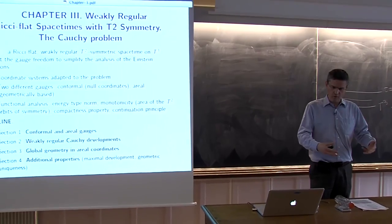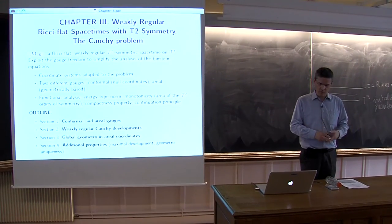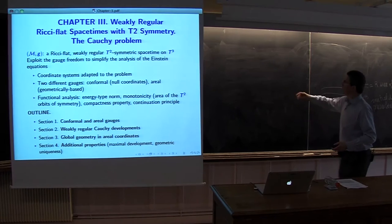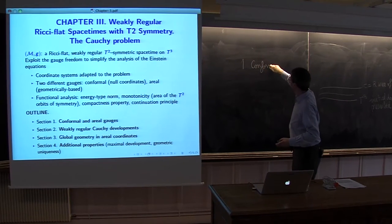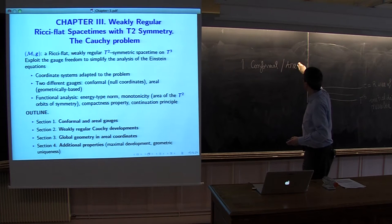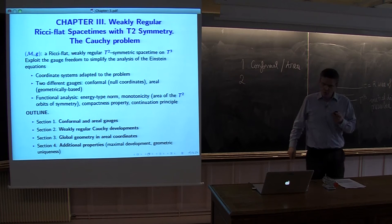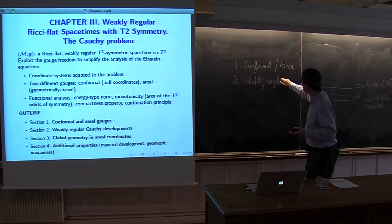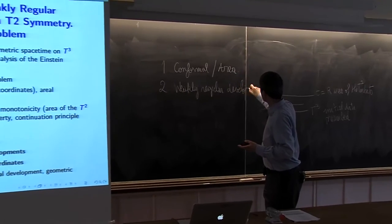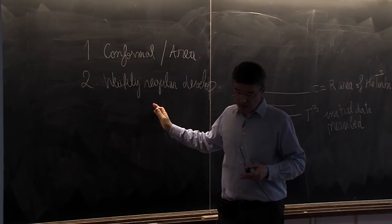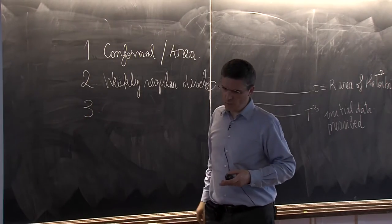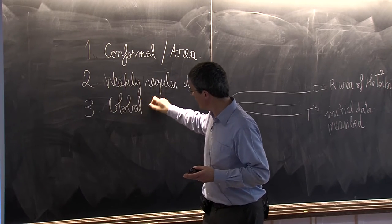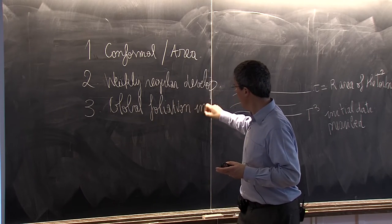The outline is: first, I revisit the conformal gauge already introduced, then discuss the areal gauge. The second part will be a proof of the existence of weakly regular Cauchy developments, done in the conformal gauge. We will then move to the areal coordinates and obtain the global foliation in areal gauge.